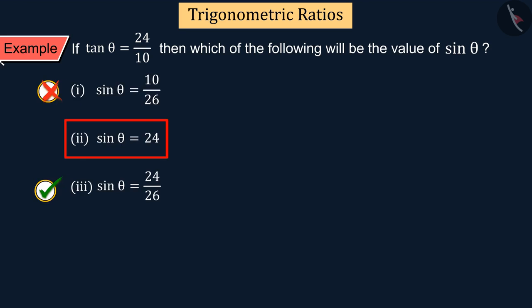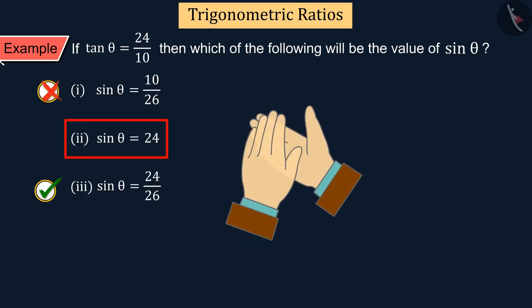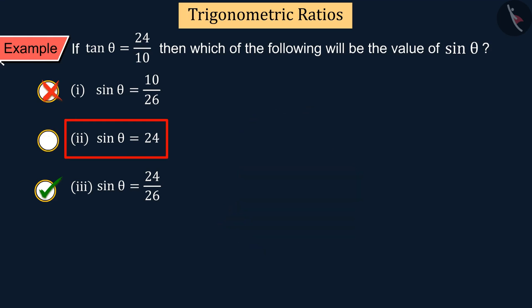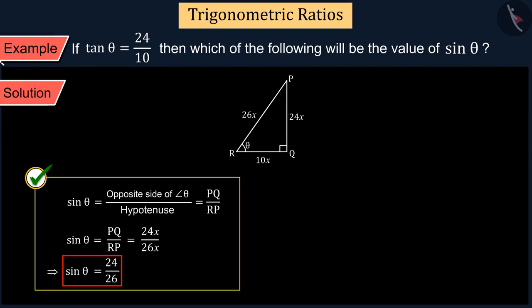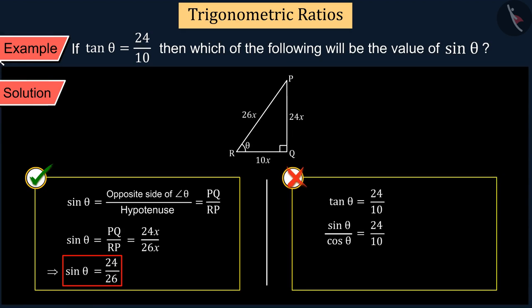If you chose option 2, then it is a good try, but this is also the wrong answer. This happened because in the value given in the question, you wrote tan θ as sin θ upon cos θ and compared the two sides, and you got the value of sin θ as 24, which is wrong.